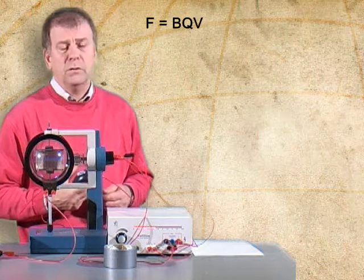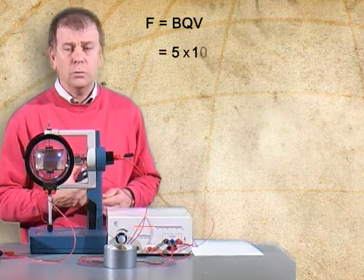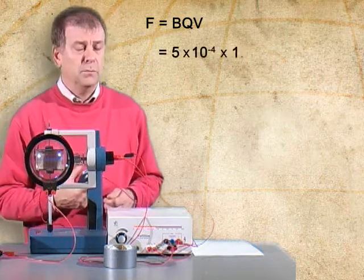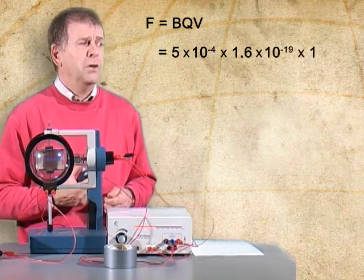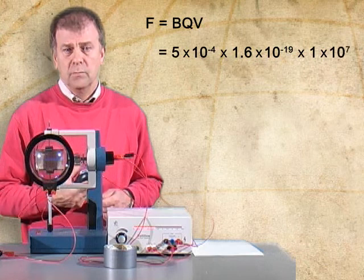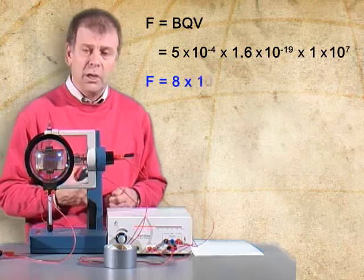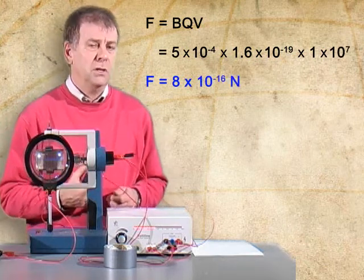B is equal to 5 times 10 to the minus 4. Q is 1.6 times 10 to the minus 19 Coulombs. And V is 1 times 10 to the 7. If you multiply all those together, you should get 8 times 10 to the minus 16 Newtons.